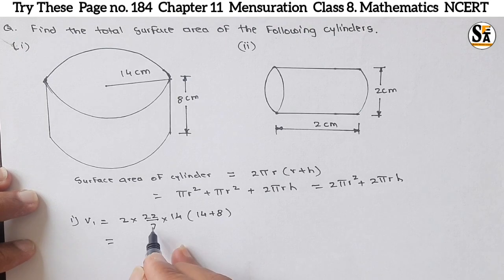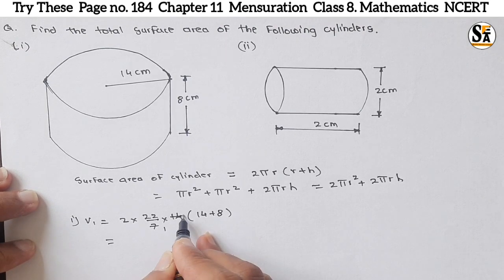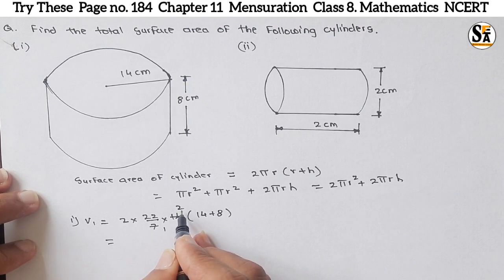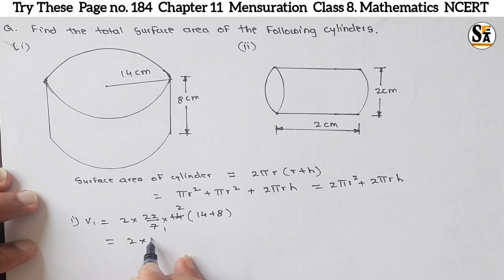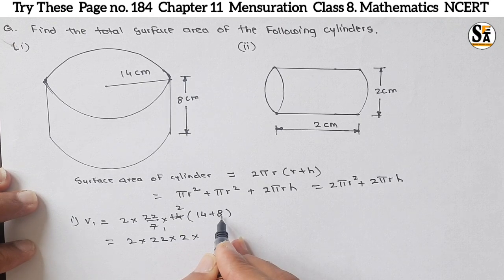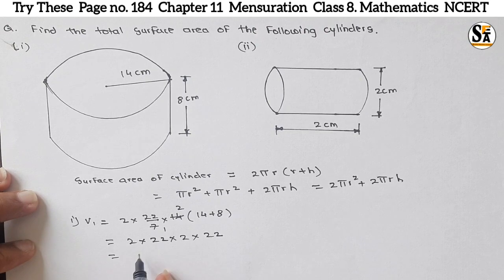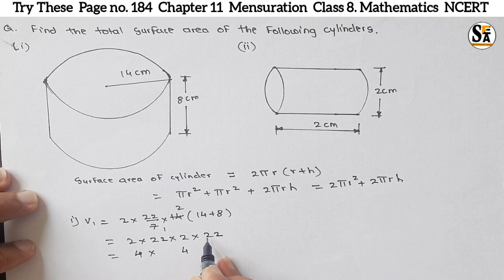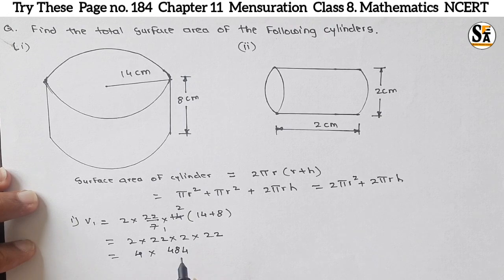Just simplify this. This 7 and this 14 we will reduce. So remaining terms are 2 × 22 × 2, and 14 + 8 is nothing but 22. Further, take the multiplication: 2 × 2 is 4, and 22 times 22. 44 + 4 is 48. If we multiply this...